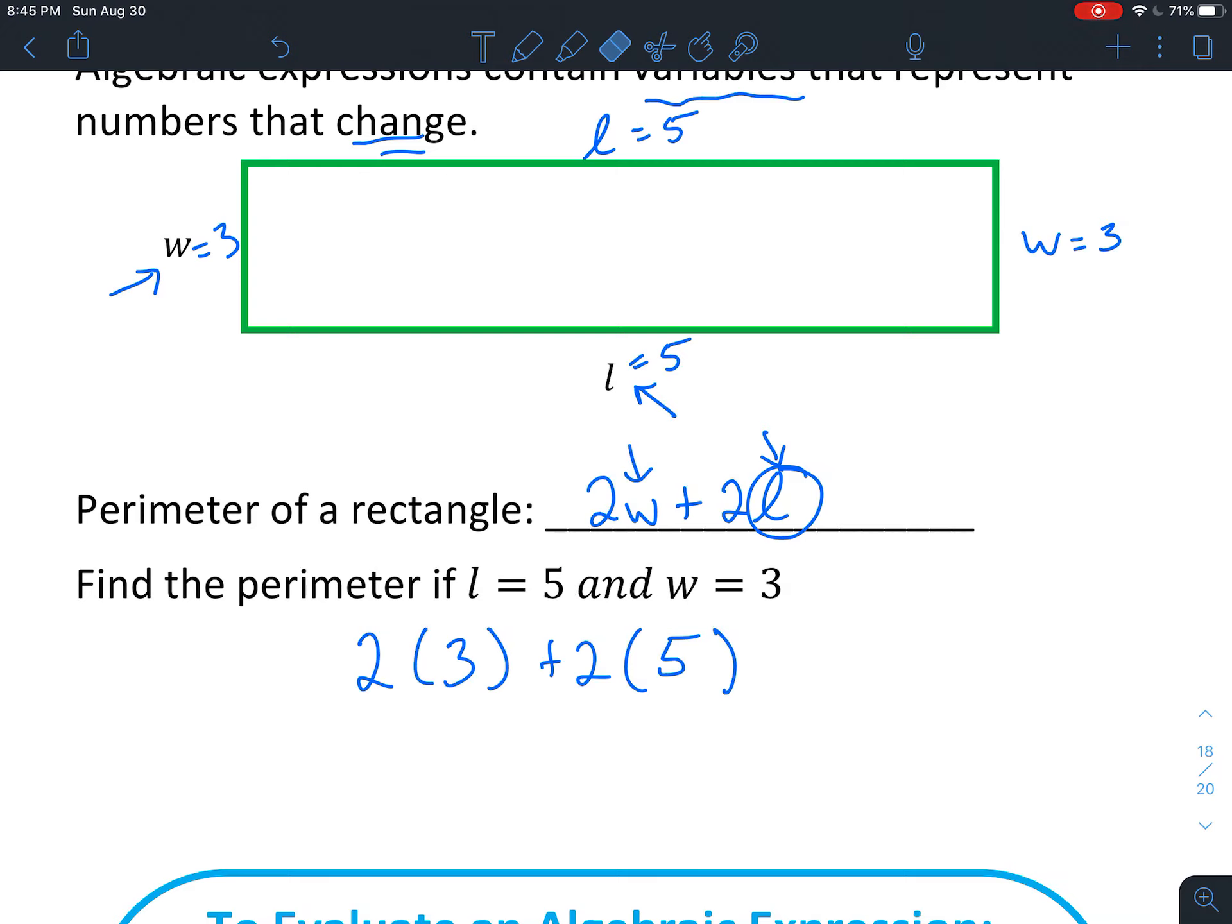You might say, wait, where do those parentheses come from? Just remember that when we are multiplying, we can separate the number with parentheses. This is just a quick way to separate it out so that you know it's multiplication. 2 times 3 is 6. You're going to follow order of operations. So do all your multiplying before you do your adding. So 2 times 5 is 10.